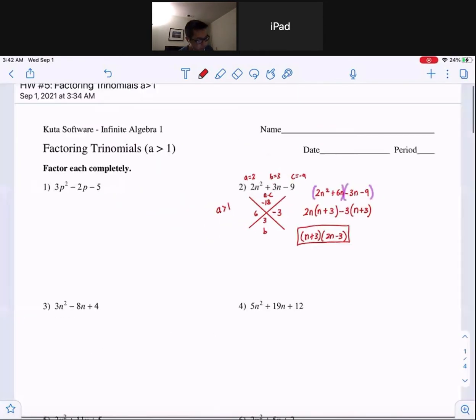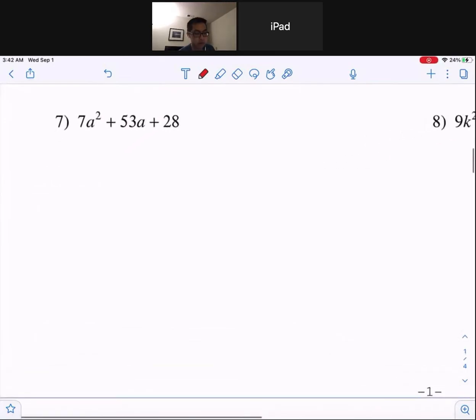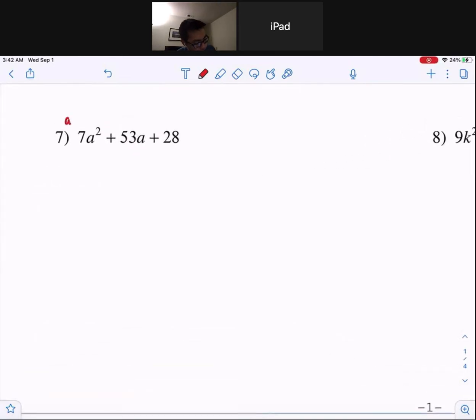So for number two, I'm also going to look at number seven. Here's our a value, 7, our b value, 53, our c value is 28.